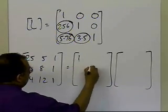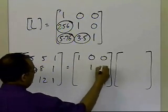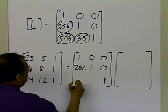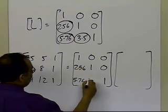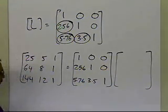This will be my L, with 1s in the diagonal, 0s above the diagonal, and the multipliers, corresponding multipliers, at the proper places below the diagonal.